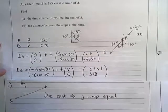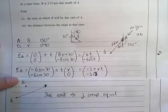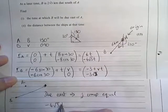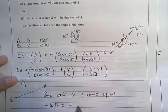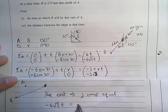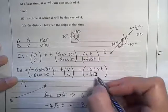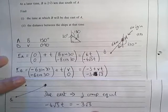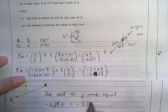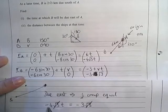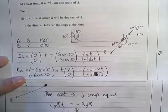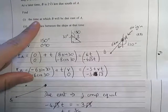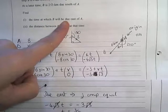This implies that the J components will be equal. So if the J components are going to be equal, we can look at these two things, and we know that minus 4 root 3 T is going to be equal to minus 3 root 3. And so, dividing both sides by root 3, dividing both sides by negative 4, we can see that T is 3 quarters.